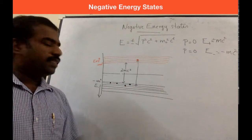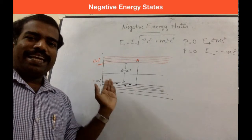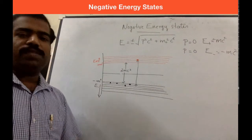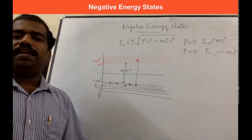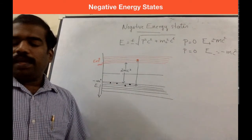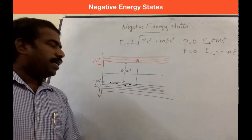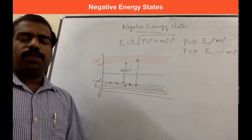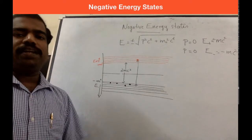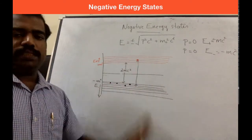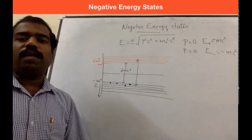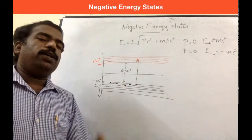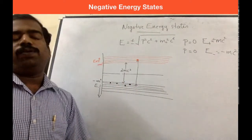Dirac suggested that the negative energy states are also occupied. If we consider an ordinary observable electron, it occupies the positive energy state. We call it the normally observable electron occupying the positive energy state.